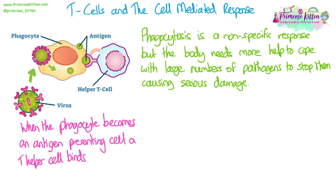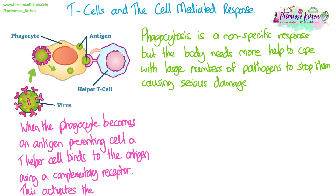This is what the T helper cell — the first type of T-cell we're going to look at — will bind to. The T helper cell binds to that antigen with a receptor on its cell surface membrane. The receptor is complementary in shape to the antigen, otherwise it wouldn't be able to bind, and this binding actually activates the T helper cell.